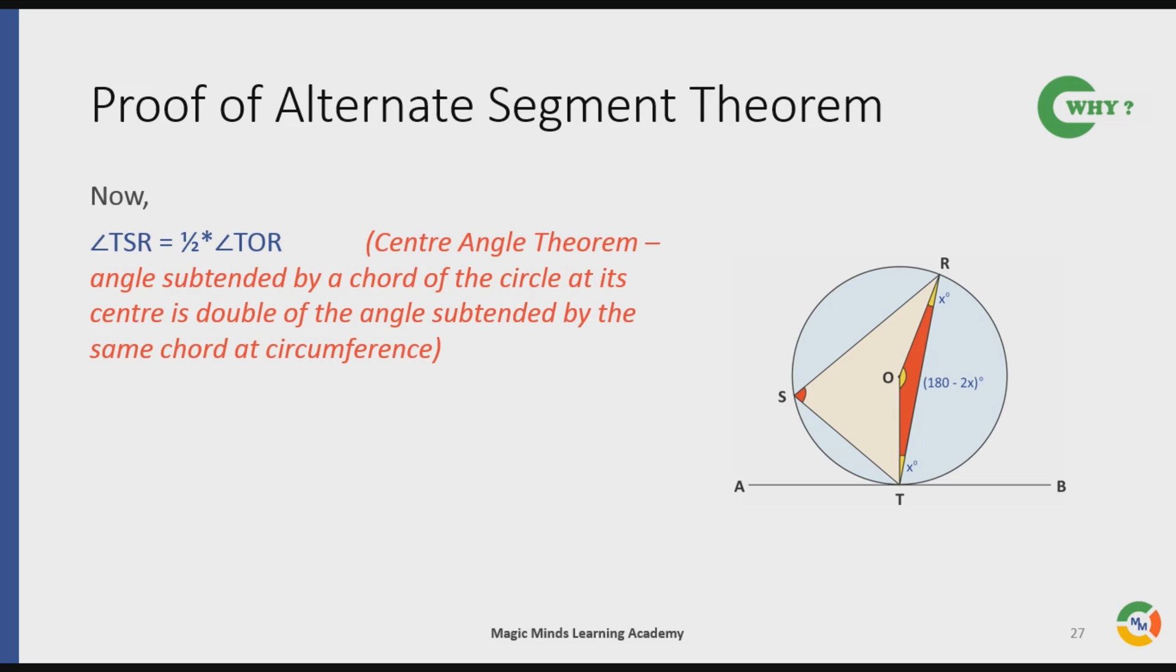Here angle TOR is the angle subtended by the chord TR at center, while angle TSR is the angle subtended by the same chord TR at circumference. Hence angle TOR will be double of angle TSR, or in other words, angle TSR will be half of angle TOR. This implies angle TSR will be 90 minus x degrees.